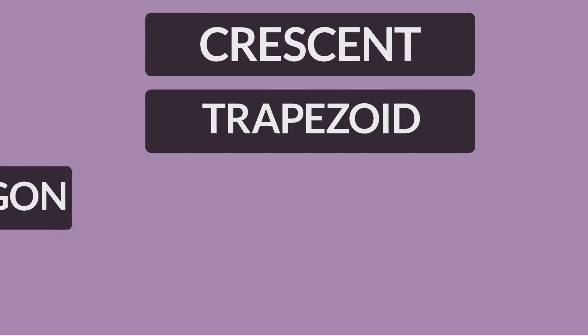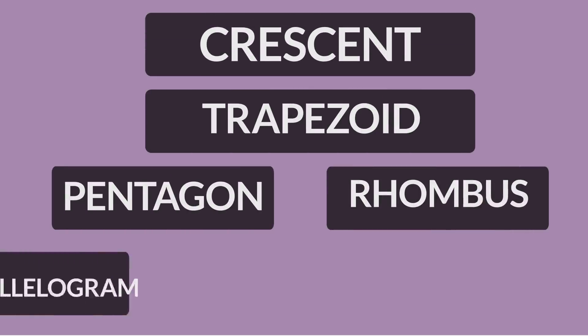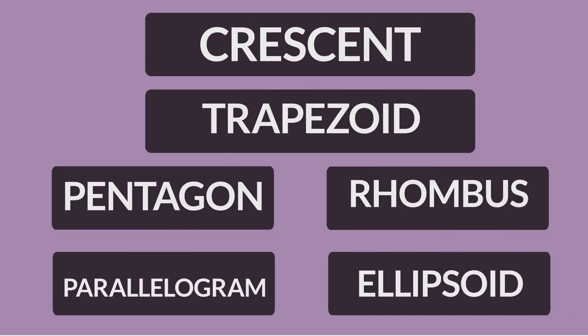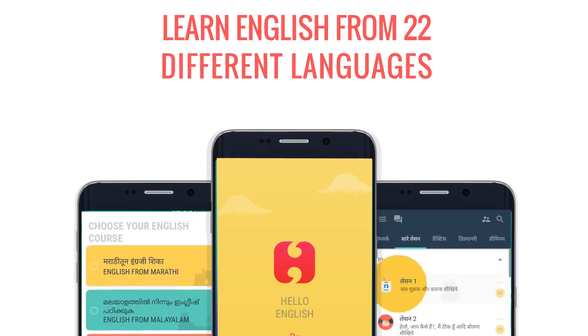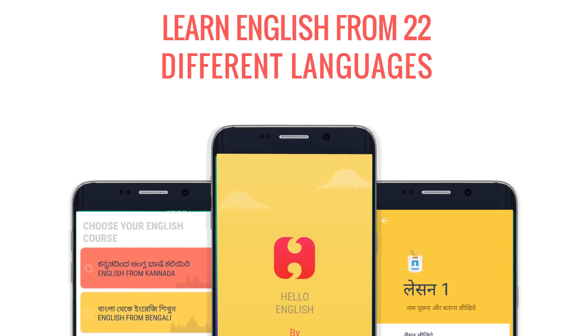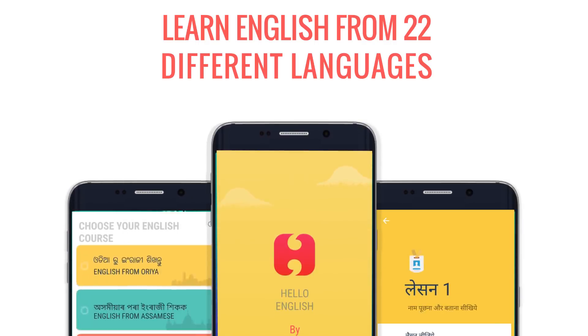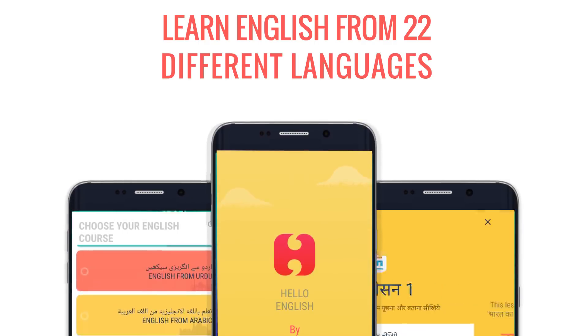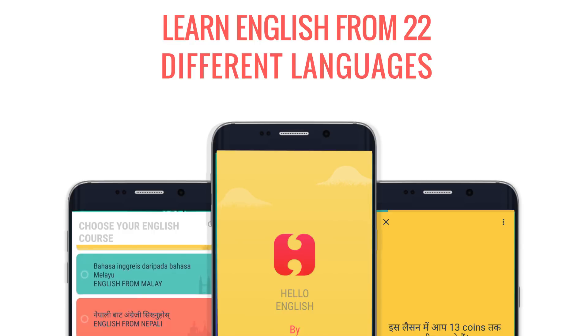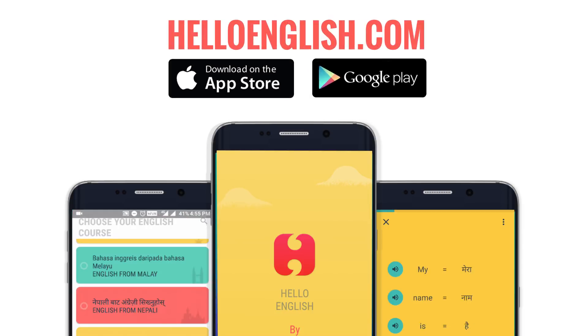Now listen to the correct pronunciation of these words once again: crescent, trapezoid, pentagon, rhombus, parallelogram, and ellipsoid. That's all for this week. To learn the correct pronunciation of some more general English words, stay updated with pronunciation class. Until then, happy learning on Hello English!